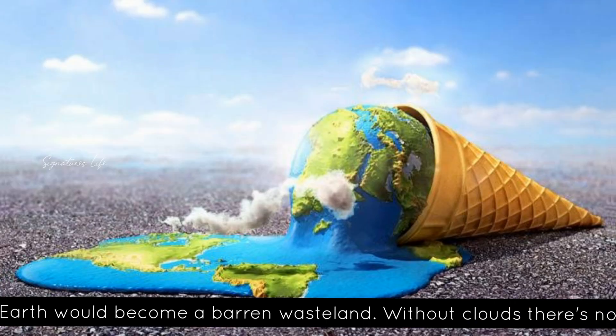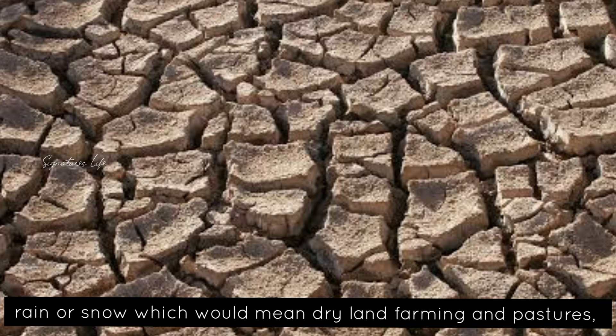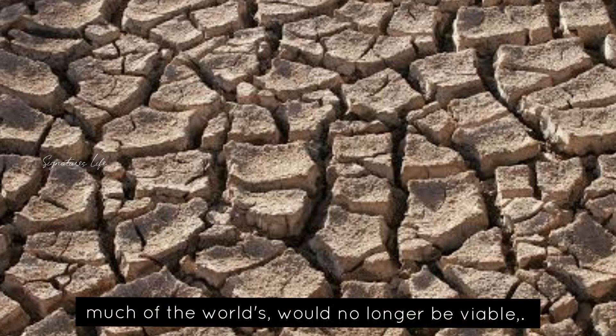Earth would become a barren wasteland. Without clouds, there's no rain or snow, which would mean dry land farming and pastures. Much of the world would no longer be viable.